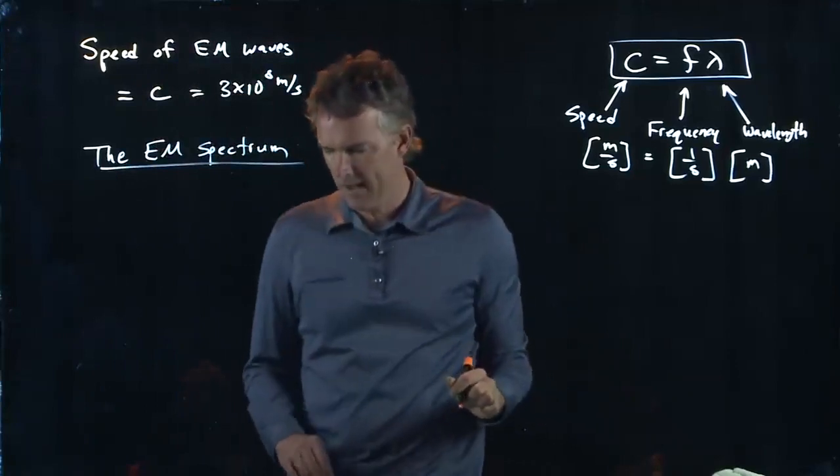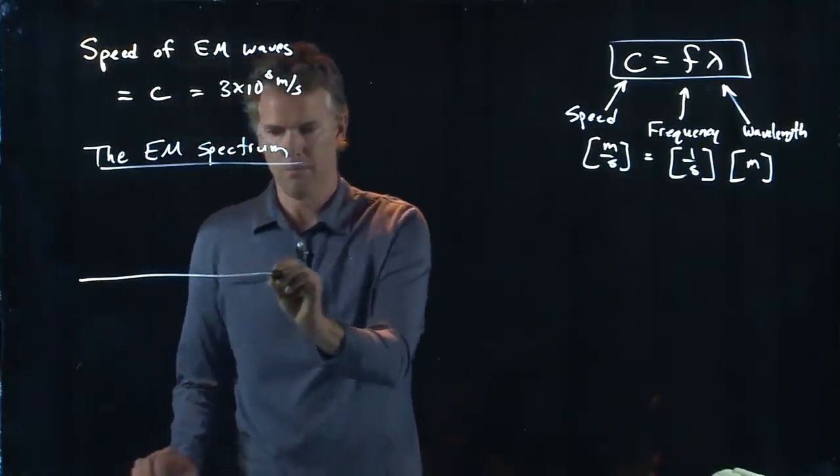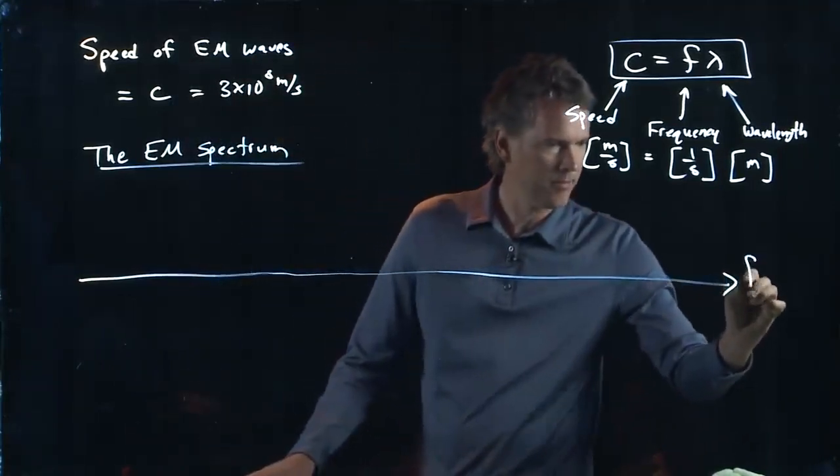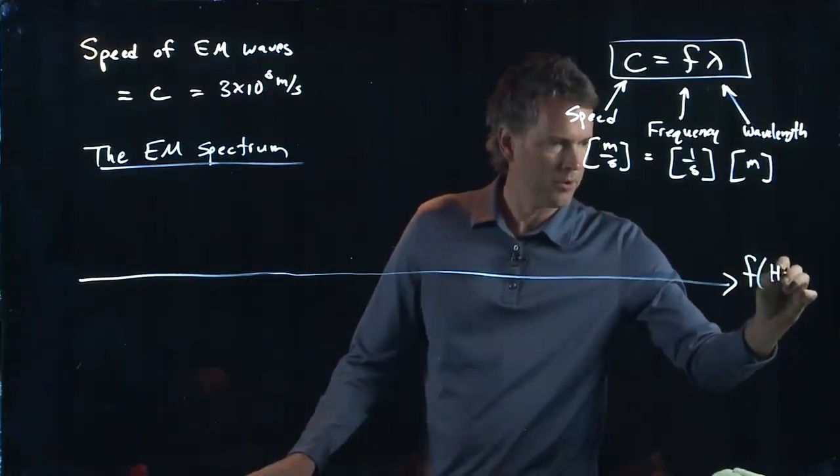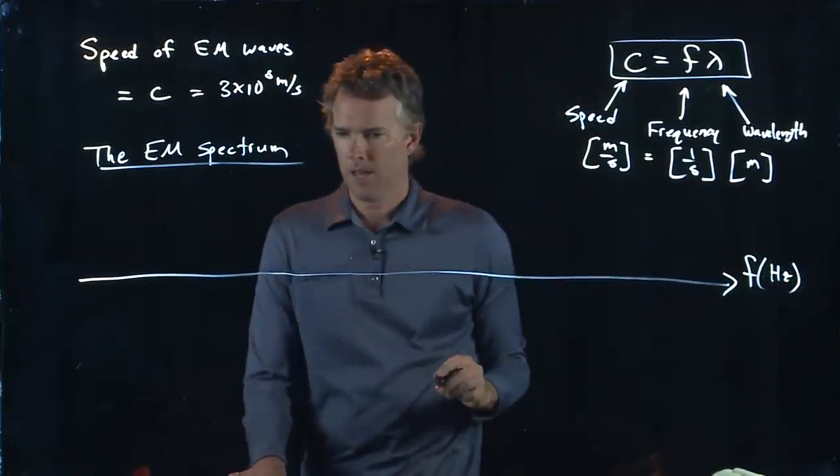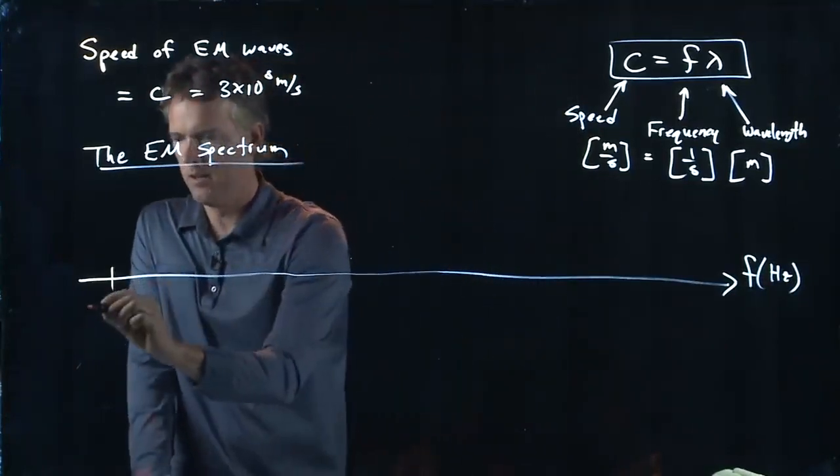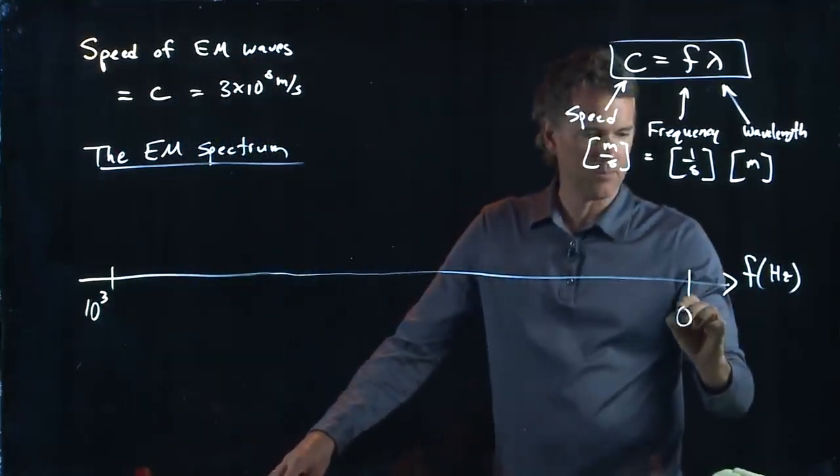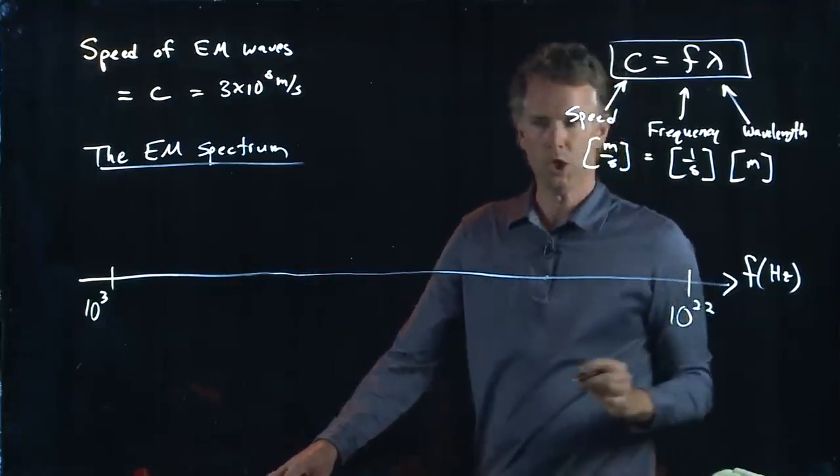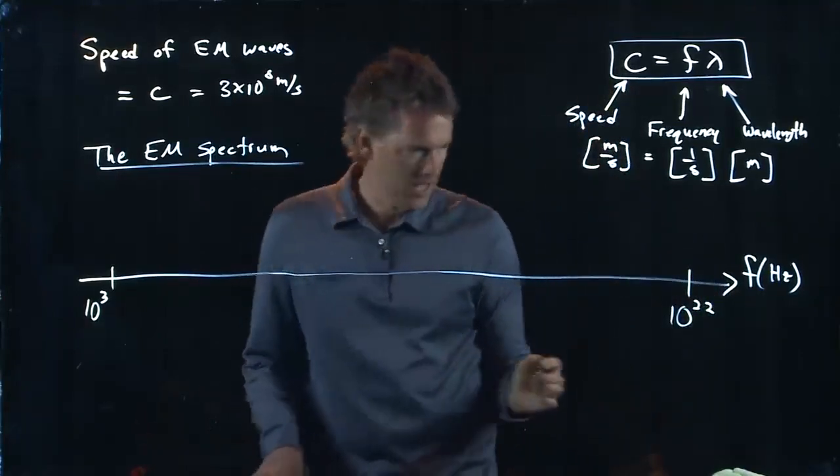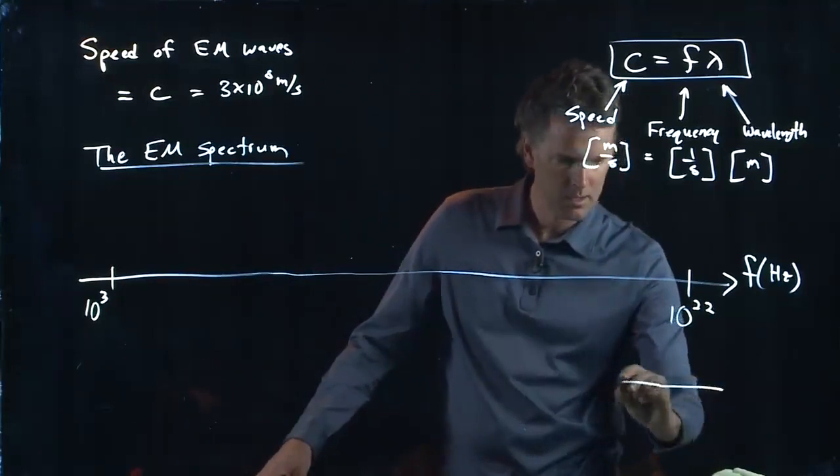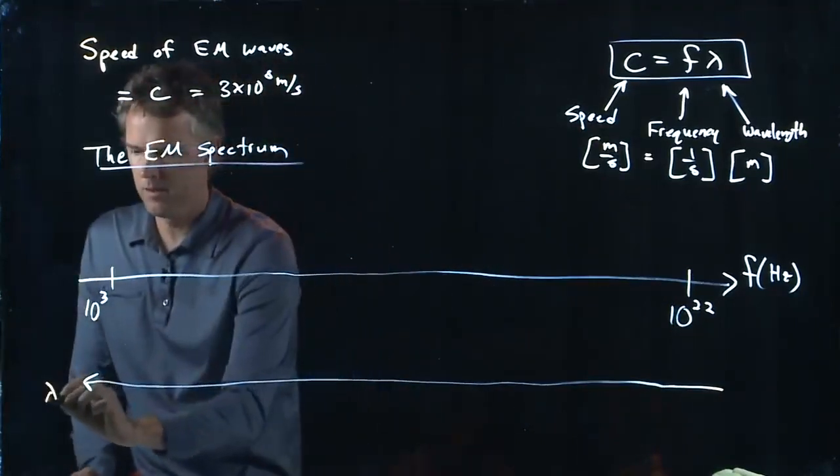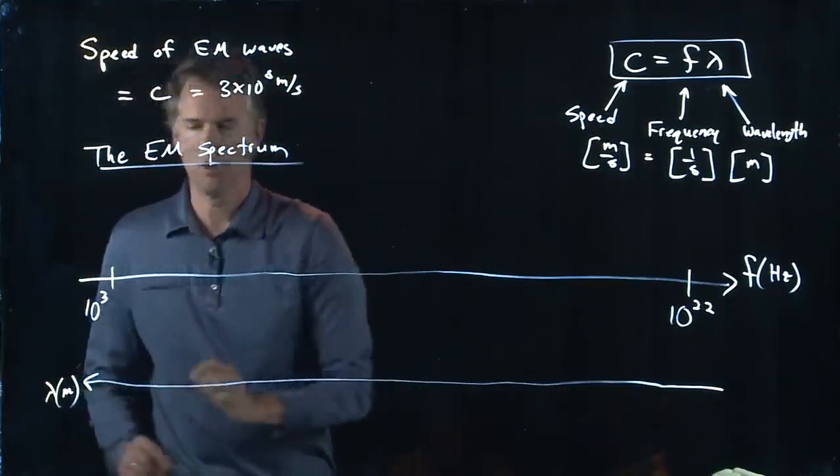We have a big long line here, and let's label this one frequency F, measured in hertz. And it's going to start down here at the low end at something like a kilohertz, and at the high end it's going to go up to 10 to the 22 hertz. And then going the other way, we have lambda, and lambda is measured in meters.